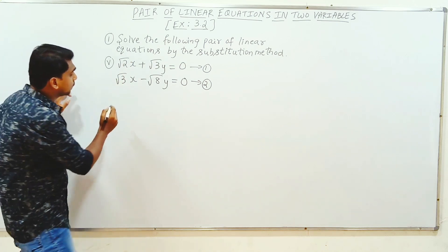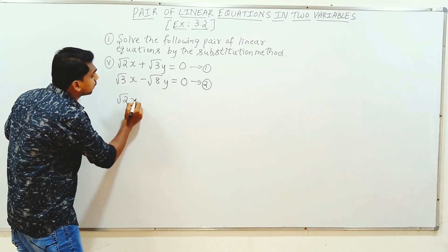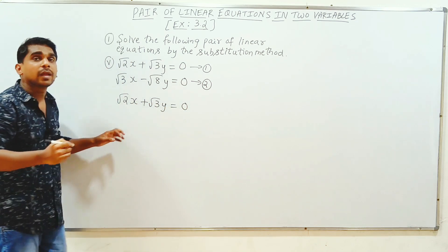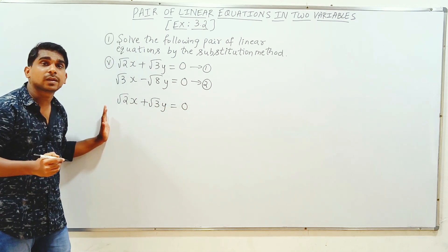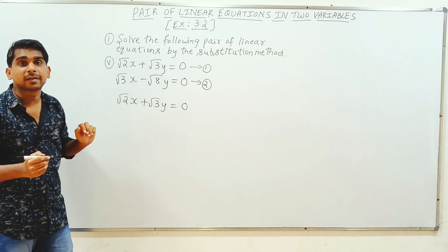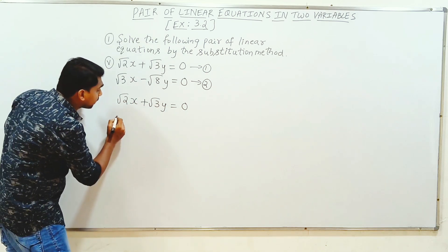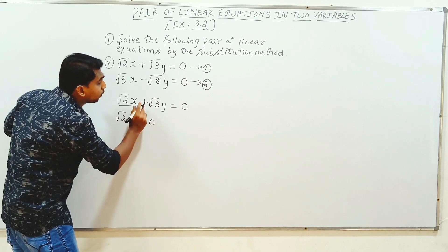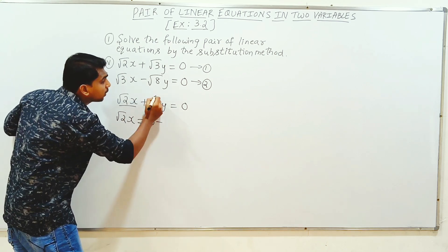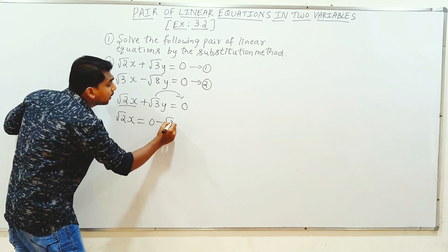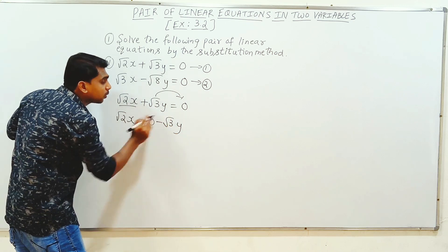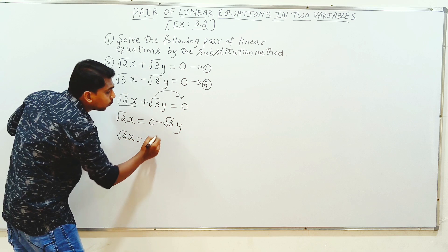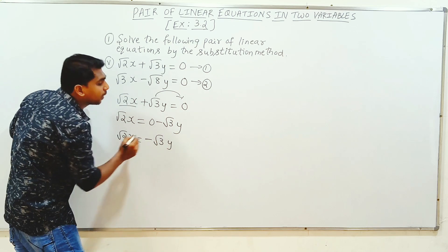First equation: x is left-sided, y is left-sided. I have left-sided x. This is 0 plus 0 is minus root 3y. This is minus root 3y. Root 2x equal to 0 minus root 3y, minus root 3y.